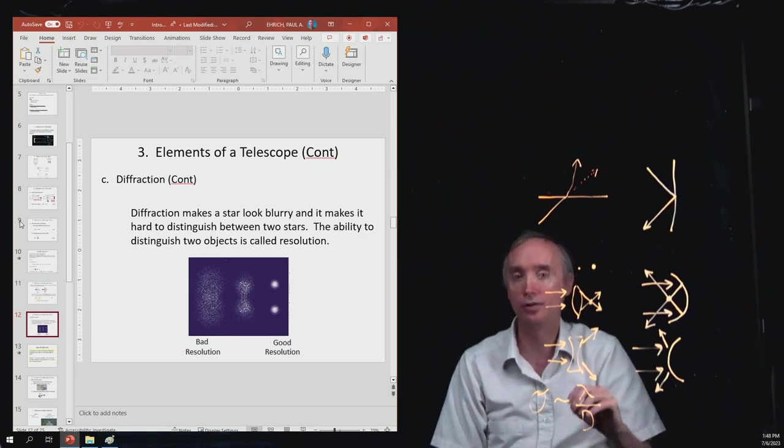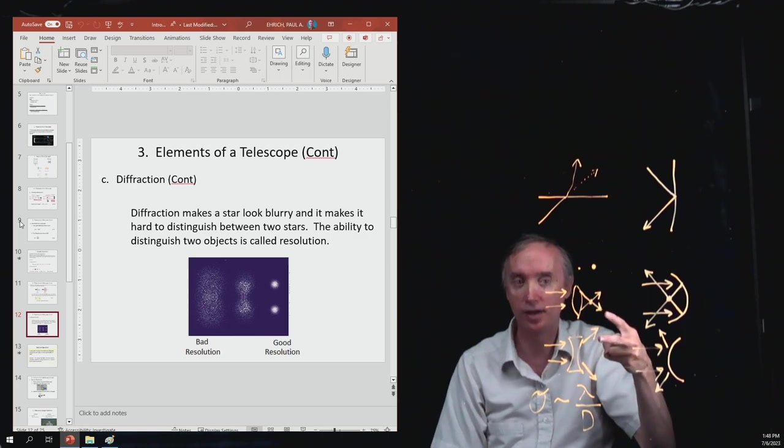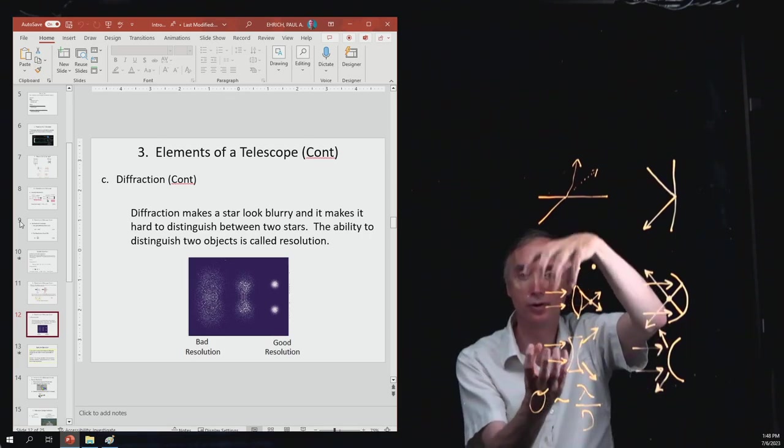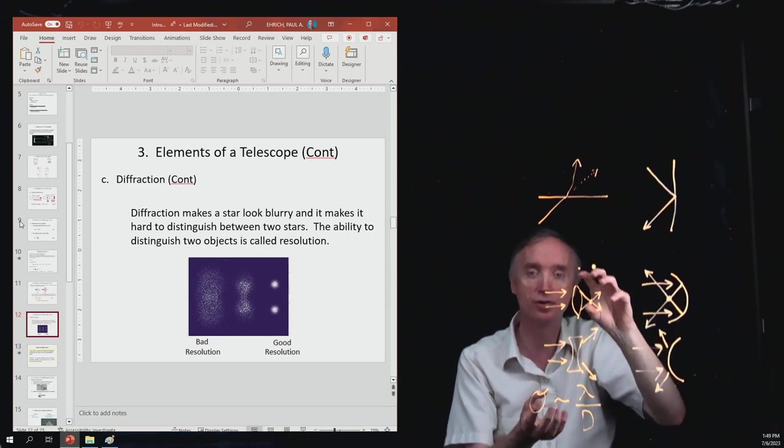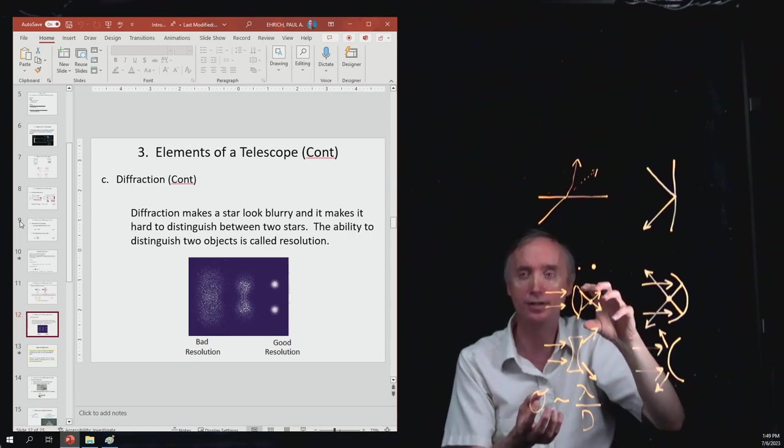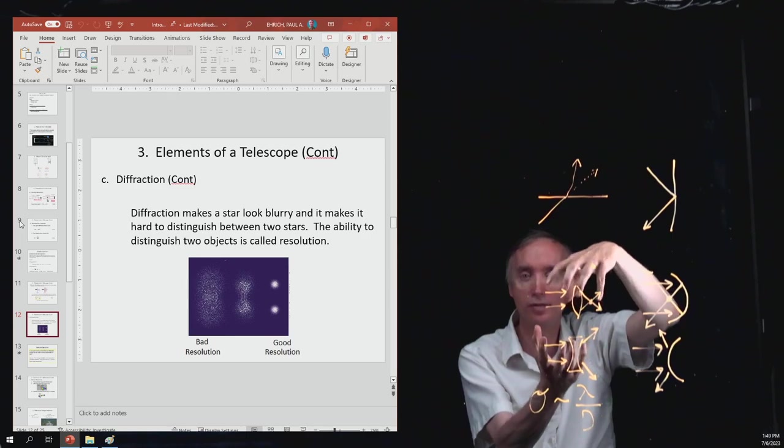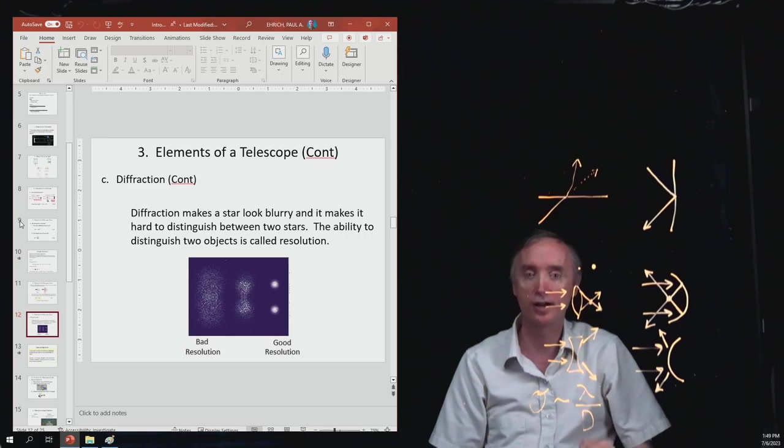So this is what it does. Let's say that you're looking at two stars and the diffraction effects are making each star get more and more blurry. Well, it can get so blurry that the two stars get so blurry that their blurriness makes it look like there's only one thing there instead of two things. This is why diffraction is a bad thing.